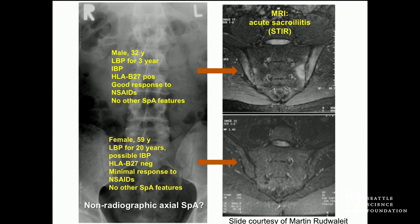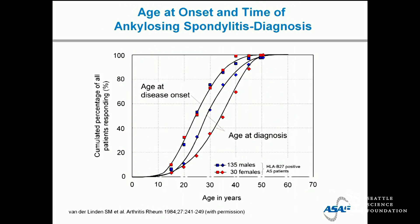Nowadays there are also interleukin-17 inhibitory therapies such as secukinumab that we would use. The difficulty in making this diagnosis — through imaging, lack of biomarkers, et cetera — has led to a delay in diagnosis. A decade ago the average was about nine years delay: six years in males and 10 to 12 years in females between onset of symptoms and diagnosis. In those days we didn't have as much therapy, but nowadays we have good therapies to put these patients into relative remission. That's why we are more insistent on case discovery these days.